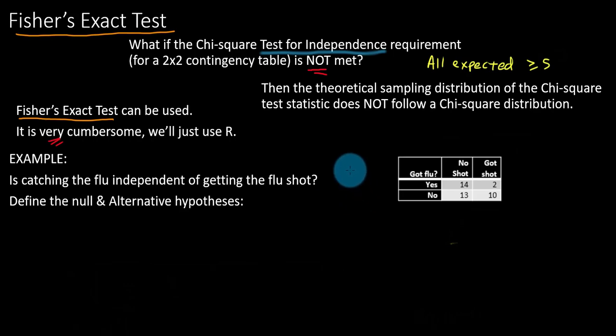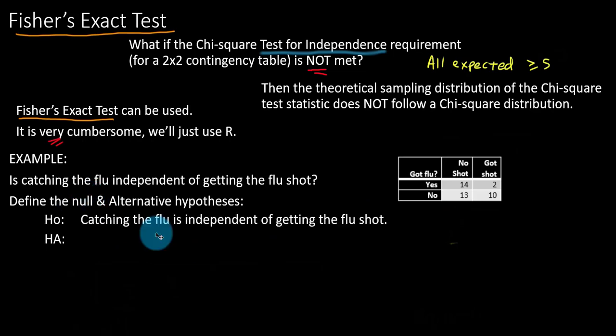Is catching the flu independent of getting the flu shot? That sounds like a perfect scenario here for a chi-square test for independence. That would be the test we would want to try to use. So let's define the null and alternative hypothesis here. The null hypothesis, remember, is always a statement of these two categorical variables being independent. So catching the flu is independent of getting the flu shot.